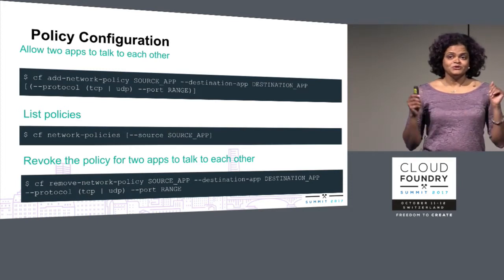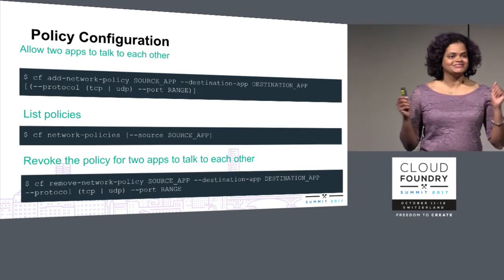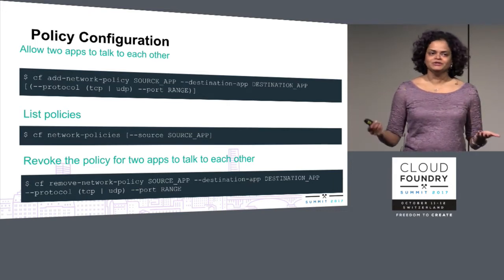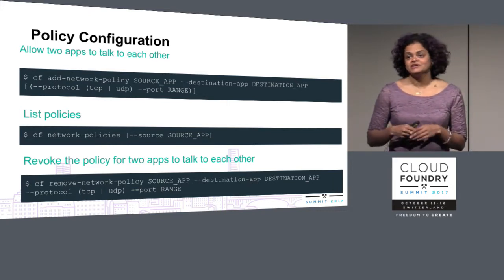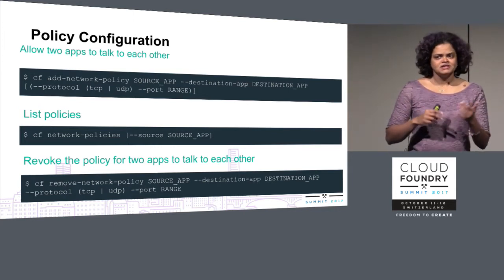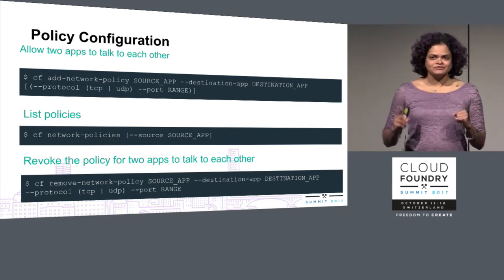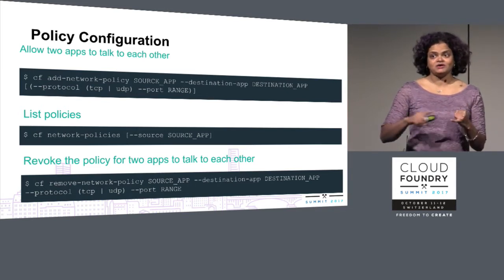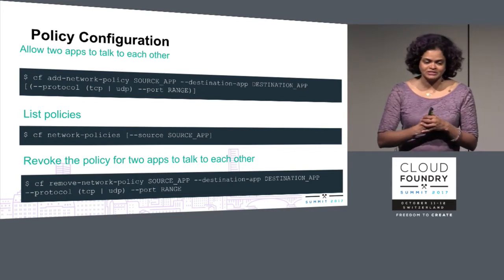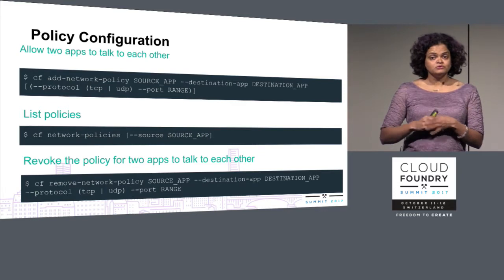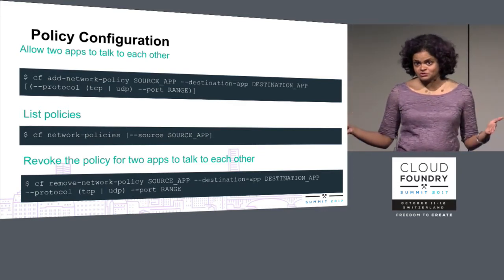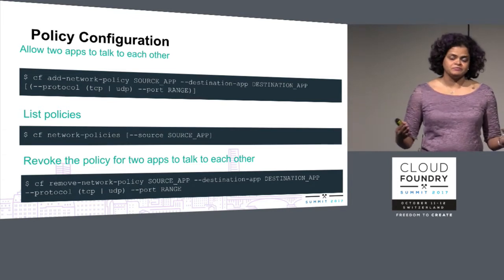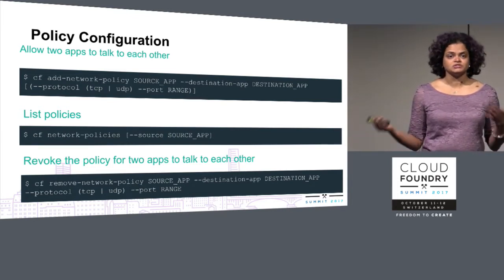The policy configuration recently got into the main CF CLI, which is very exciting. Before September, you had to download a CF CLI plugin and use the networking commands. Now you can just go to the CF CLI — the commands are very simple. You can use TCP as well as UDP, so if you have UDP use cases, you can enable those with container networking. You can use any port you want, including multiple ports within a single policy, which opens up many different types of applications that can run on Cloud Foundry.